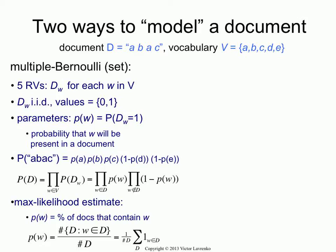So that's the multiple Bernoulli — that's what we did in the previous lecture. Now, there is another way to model the same quantity, another way to model a document. This one is an urn, or a multinomial model, or a sequence model, or a unigram model. It has many names in many different domains, but it's all the same thing.